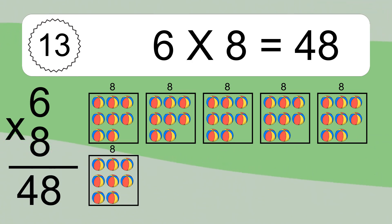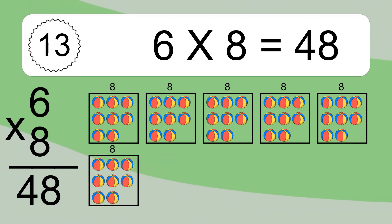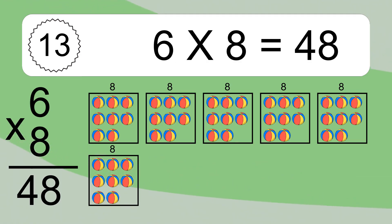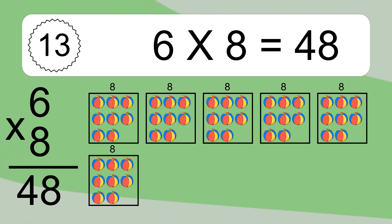We have 6 boxes, and each box has 8 colorful balls inside. If you count all the balls in all the boxes together, you will have 6 times 8 balls. This equals 48 balls.